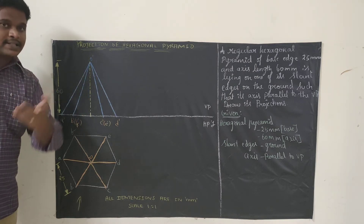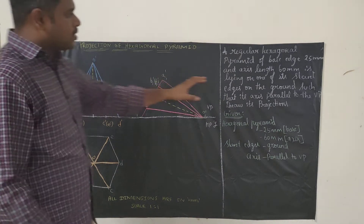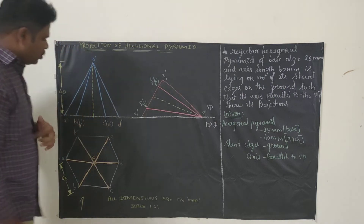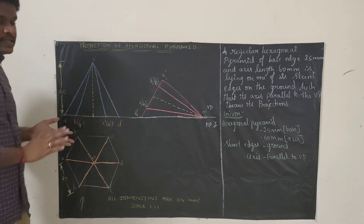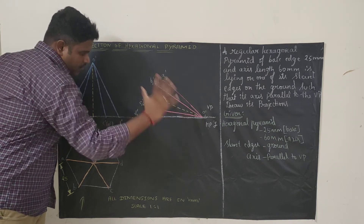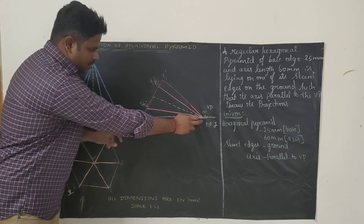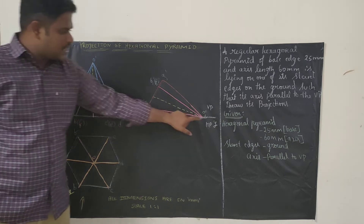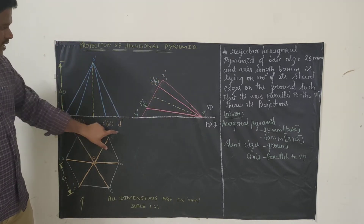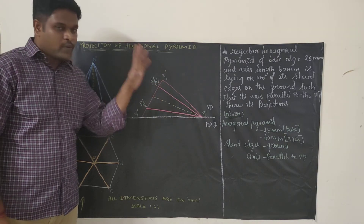We have the front view; now we keep the slant edge lying on the ground. The question asks us to tilt the pyramid so that one slant edge lies on the ground. There are two slant edges — O dash D dash and O dash A dash — you can use either. Measure O dash to D dash and place it on the reference axis as O1 dash to D1 dash. Then measure O dash to A dash; from O1 dash cut an arc, measure D dash to A dash, from D1 dash cut an arc. Where both arcs intersect is A1 dash, giving us the tilted triangle.